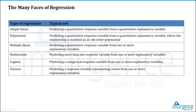Multiple linear regression is used when predicting a quantitative response variable from two or more explanatory variables, which could be numerical as well as categorical. Multivariate regression is used when you have more than one response on the dependent variable side — in those cases it makes more sense to use a decision tree. Logistic regression is used when predicting a categorical response variable with two levels, with one or more explanatory variables. Poisson distribution is used for representing counts from one or more explanatory variables.